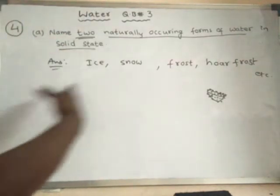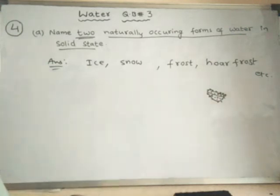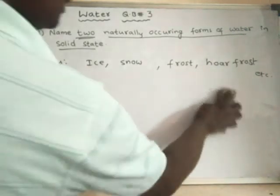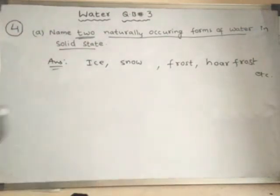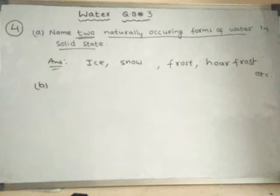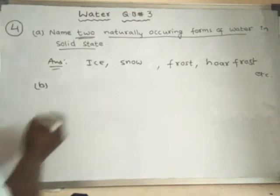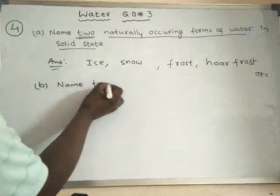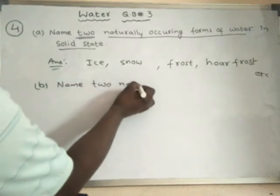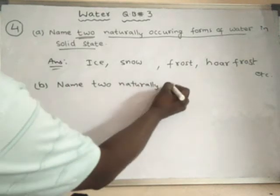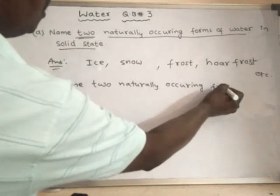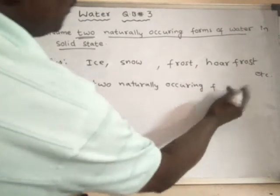We have to write only two but I have written four, so learn all four. The next sub-question is: name two naturally occurring forms of water in liquid state.